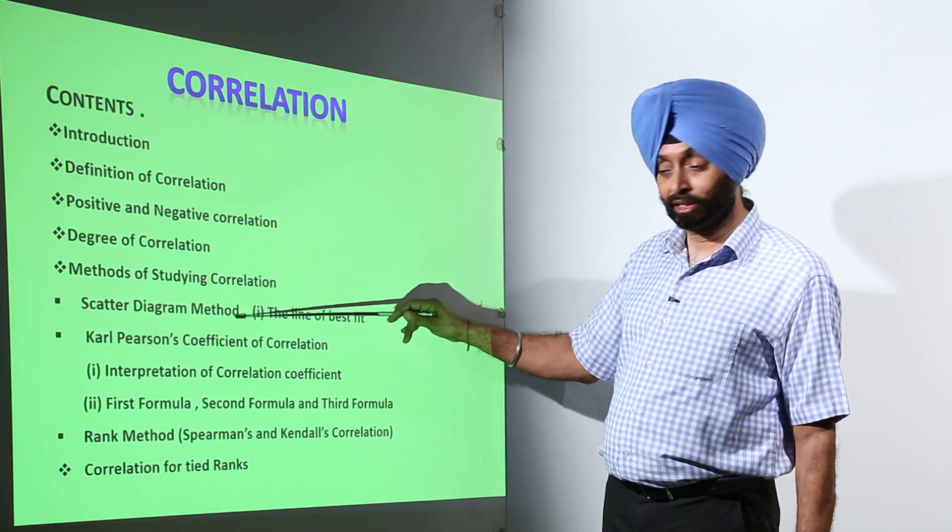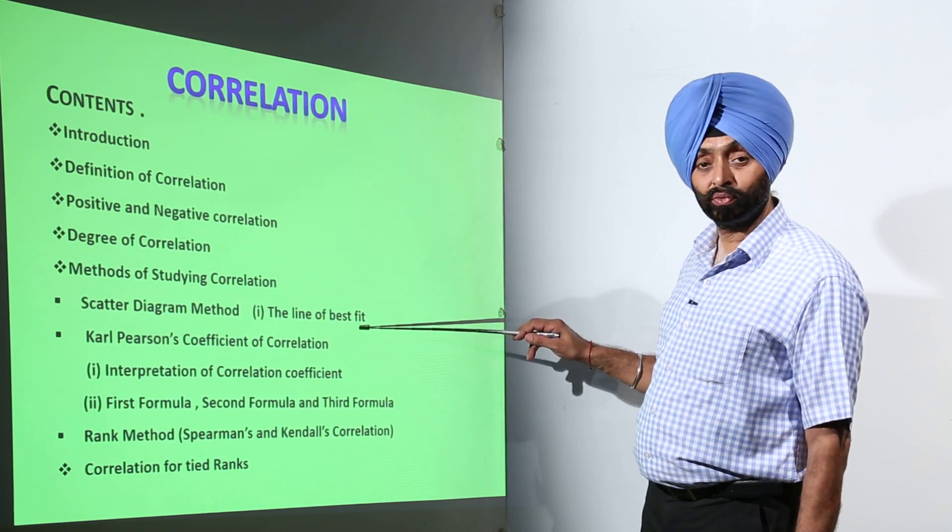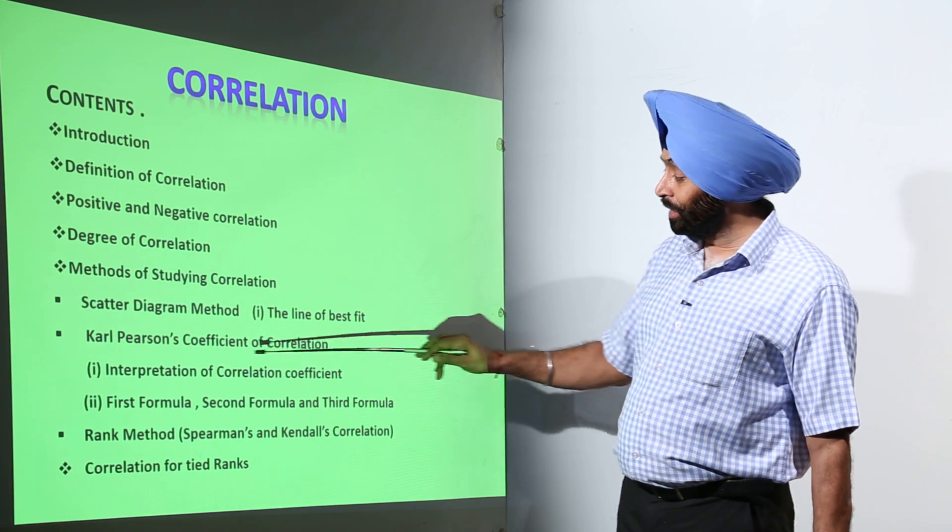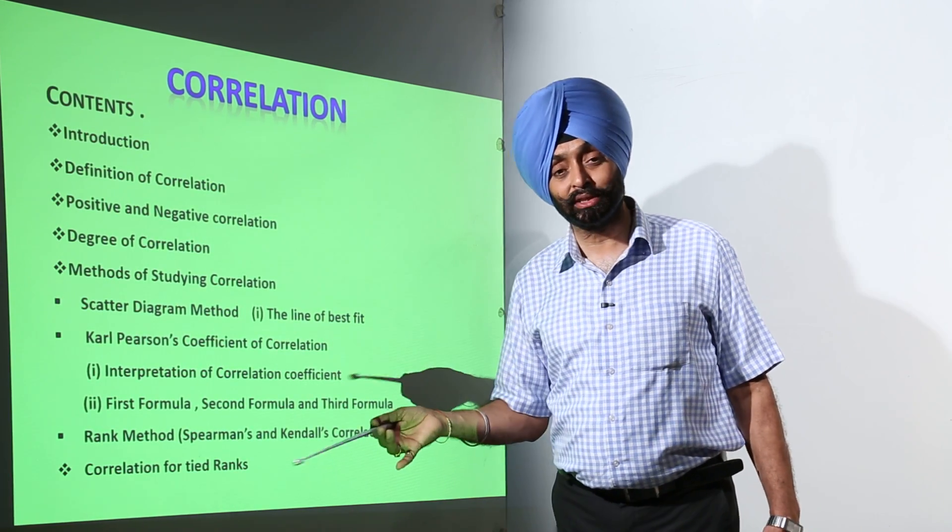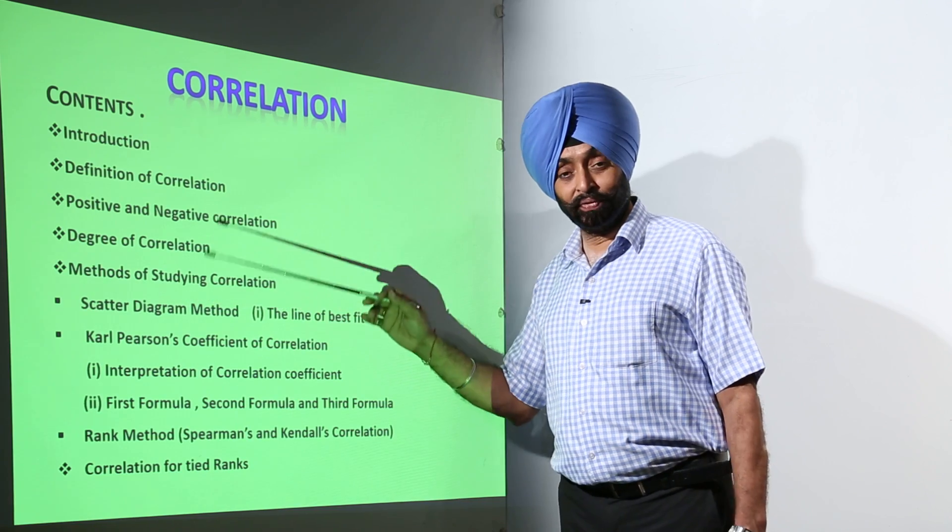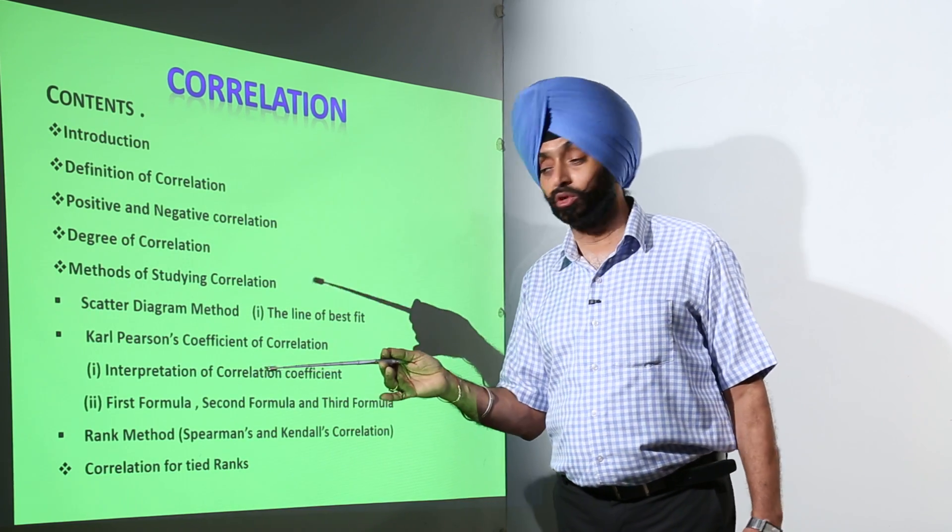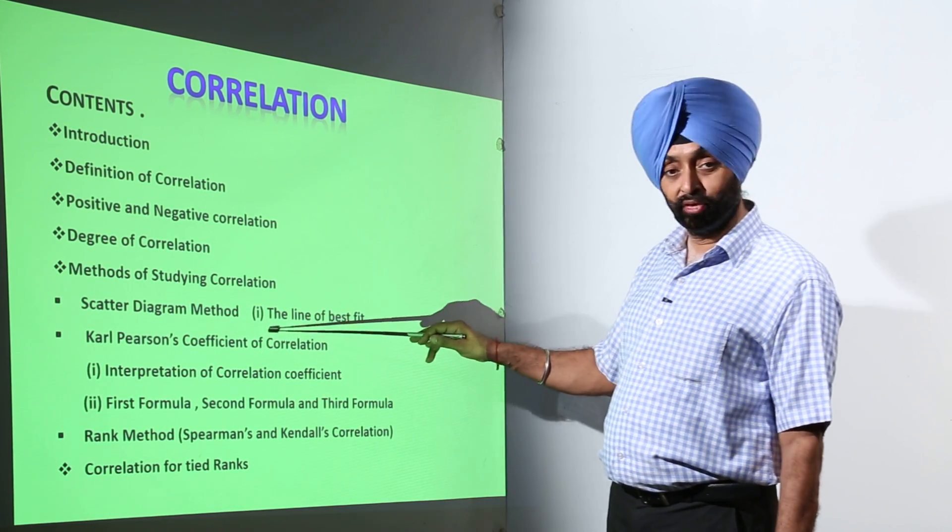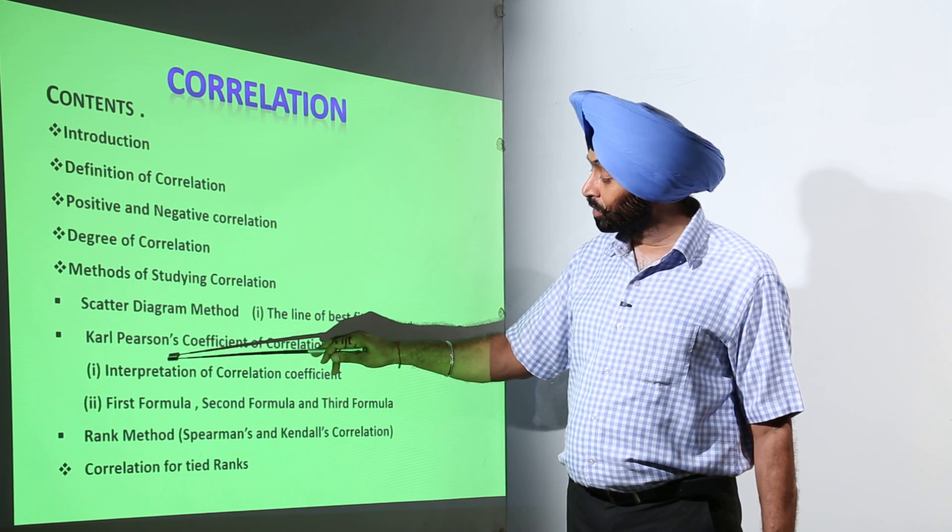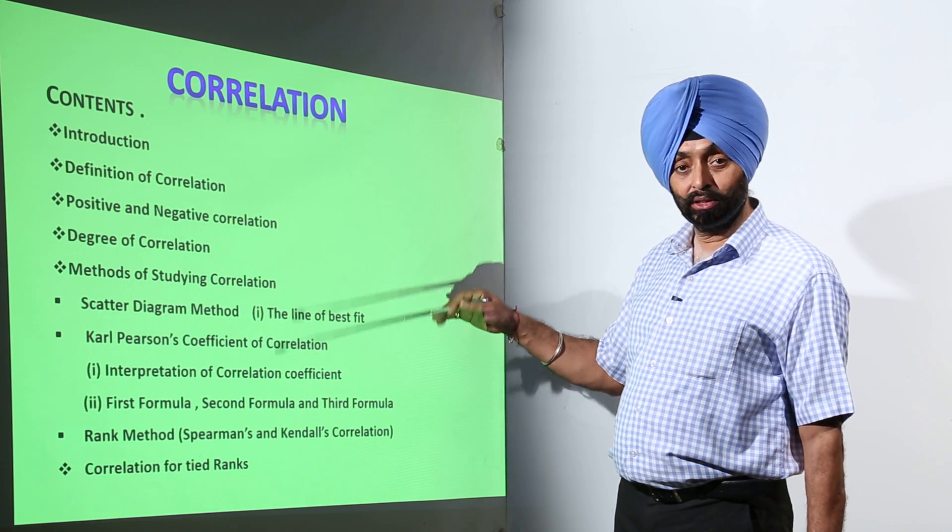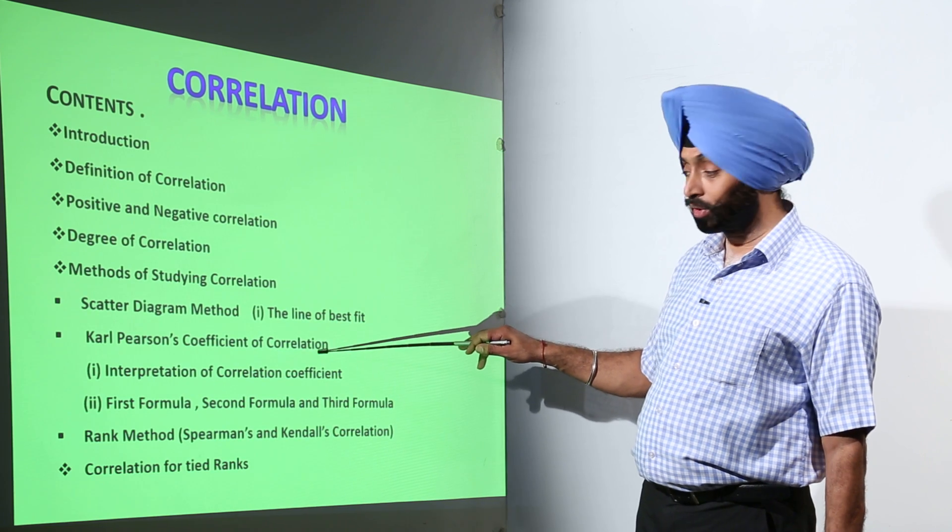And in the scatter diagram method we are having the line of best fit. After that we are going to calculate something. What is the difference between scatter diagram and calculation part? The calculation was given by the famous mathematician Carl Pearson and the term is called Carl Pearson's coefficient of correlation.